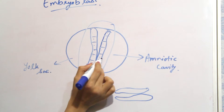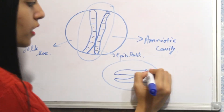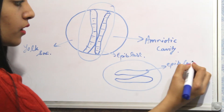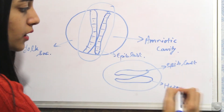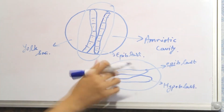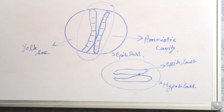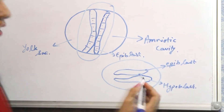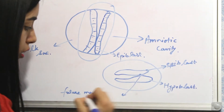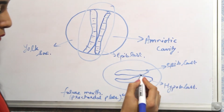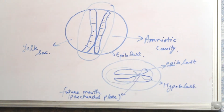Looking at a vertical cross-section, there are two layers. The upper layer is called epiblast and the lower part is hypoblast. These two layers are attached at just one point — all other parts are separated. This single fusion point is called the pre-cordal plate, which represents the future mouth. From this we can determine the head end and the tail end of the embryo.